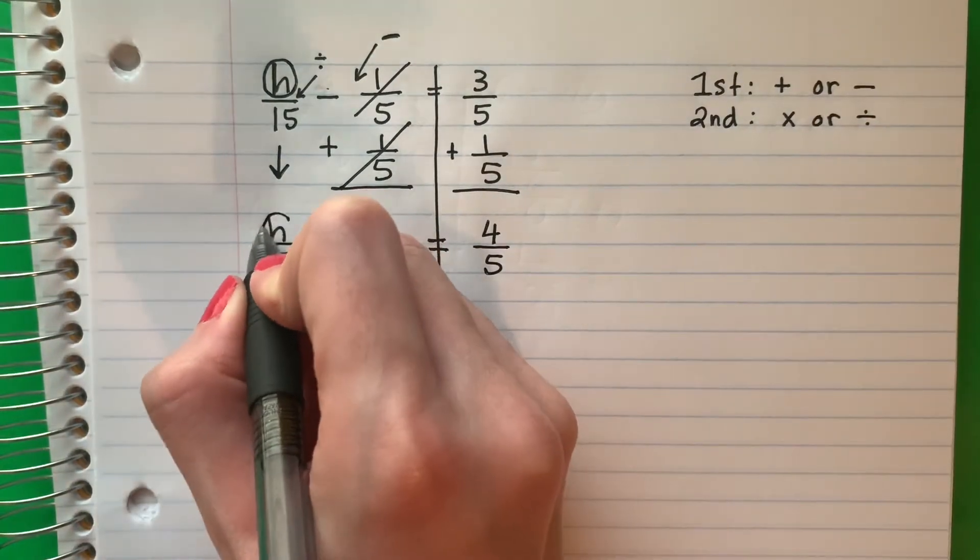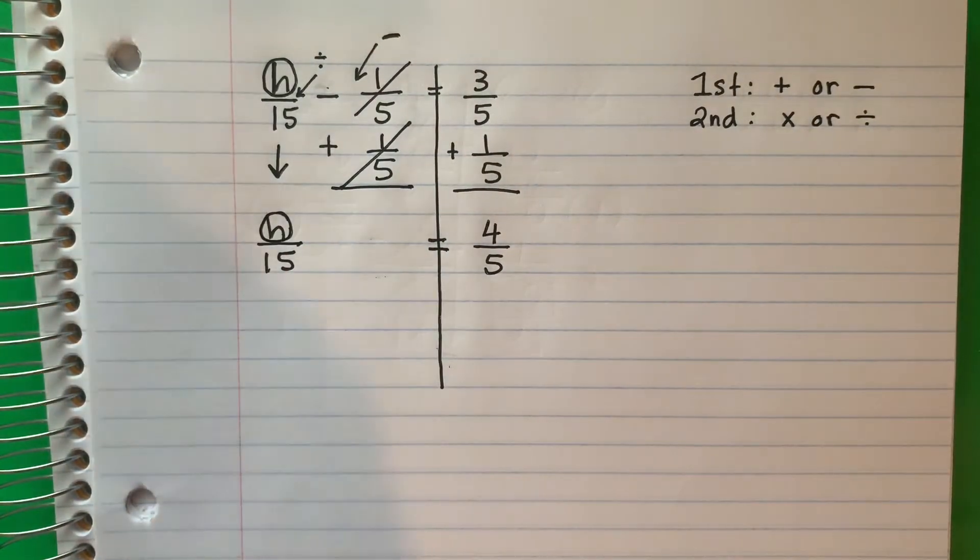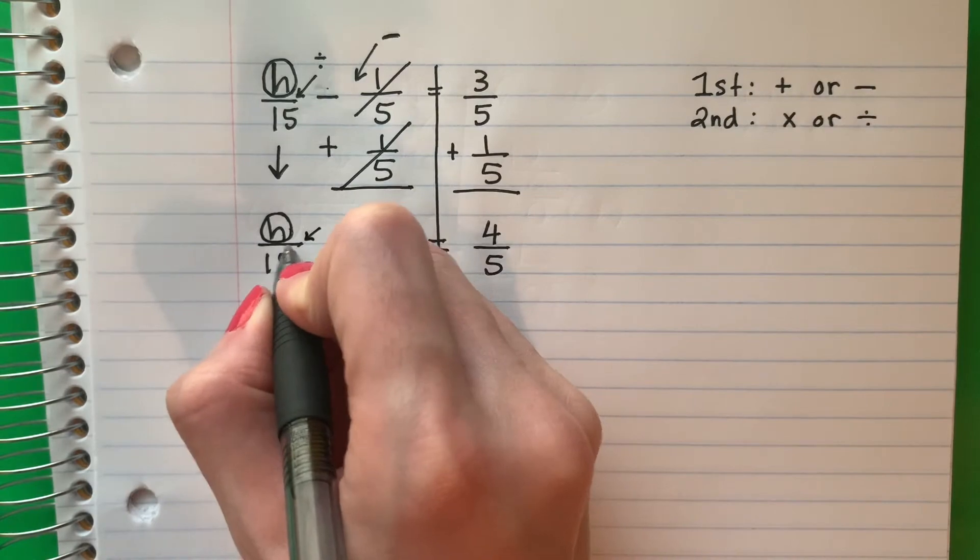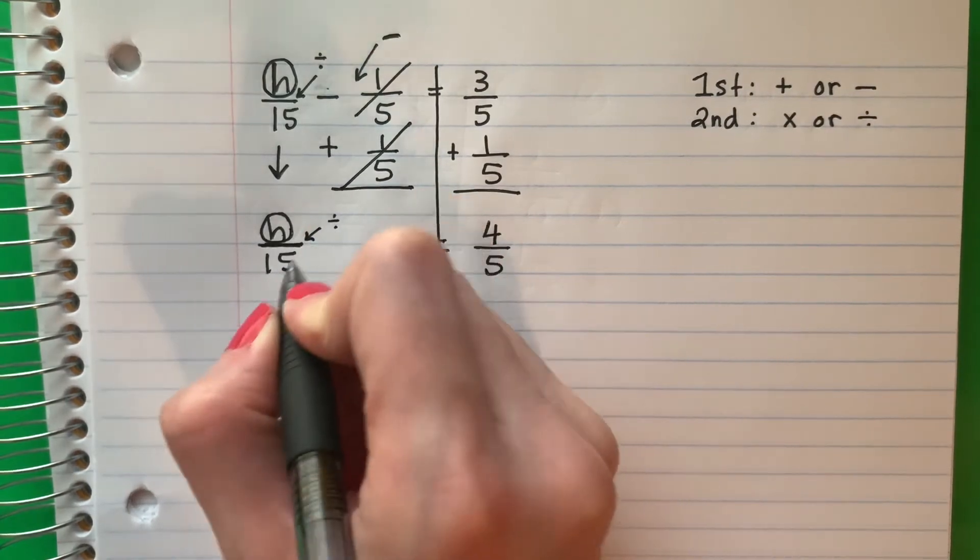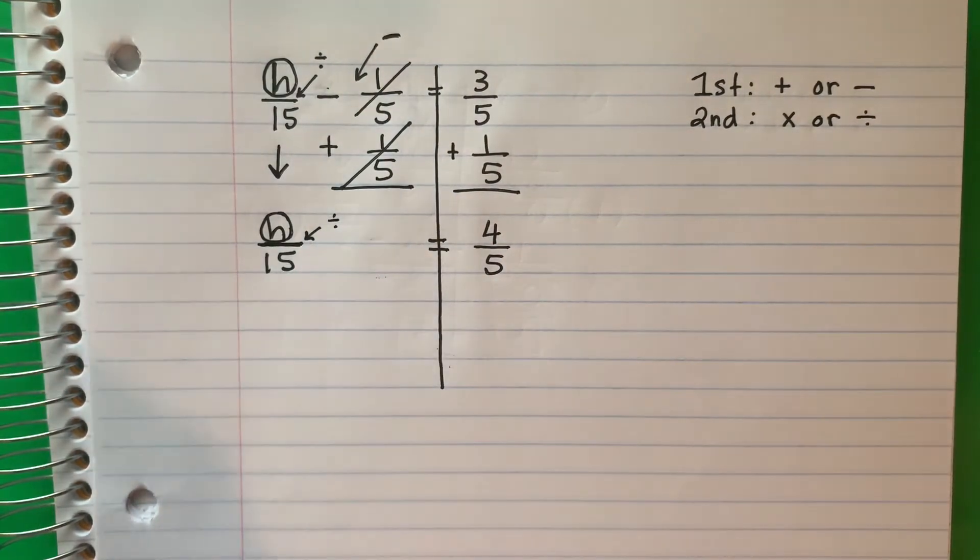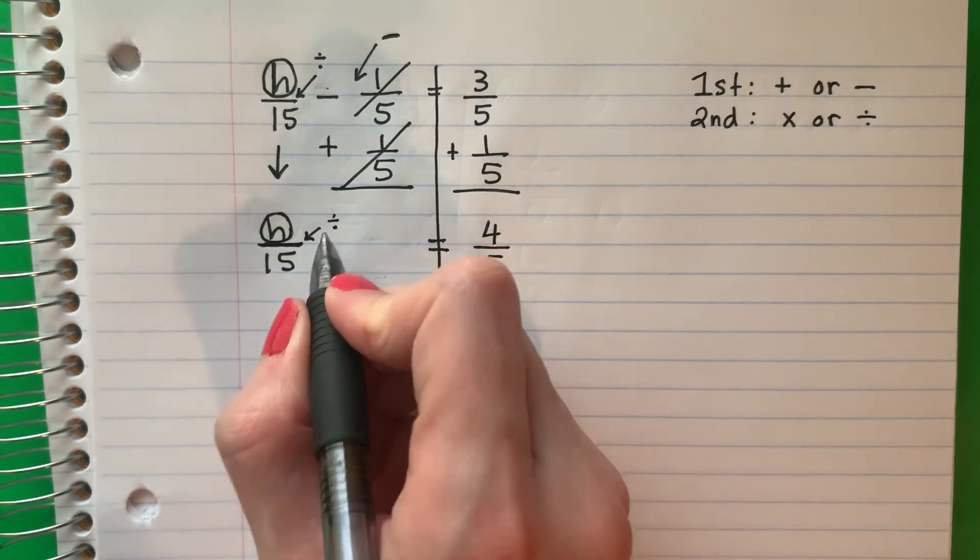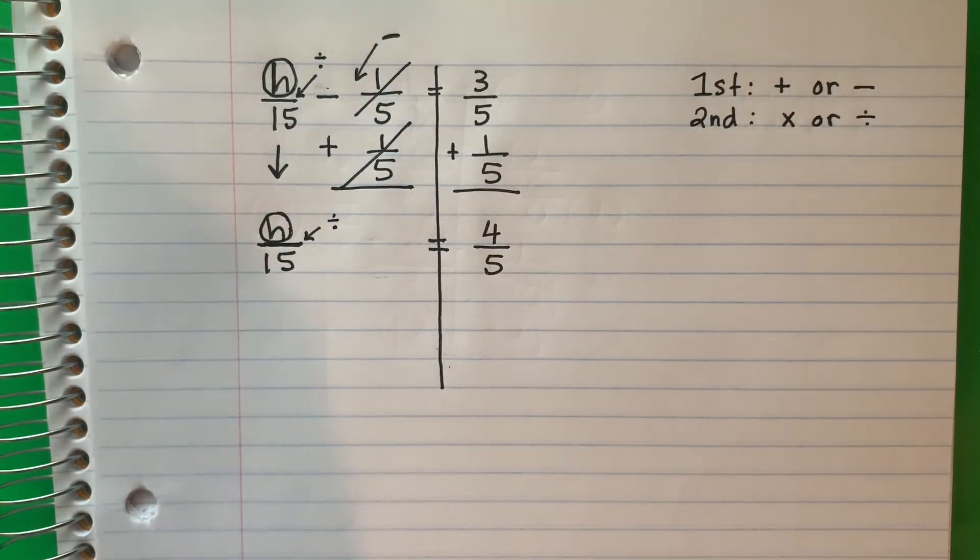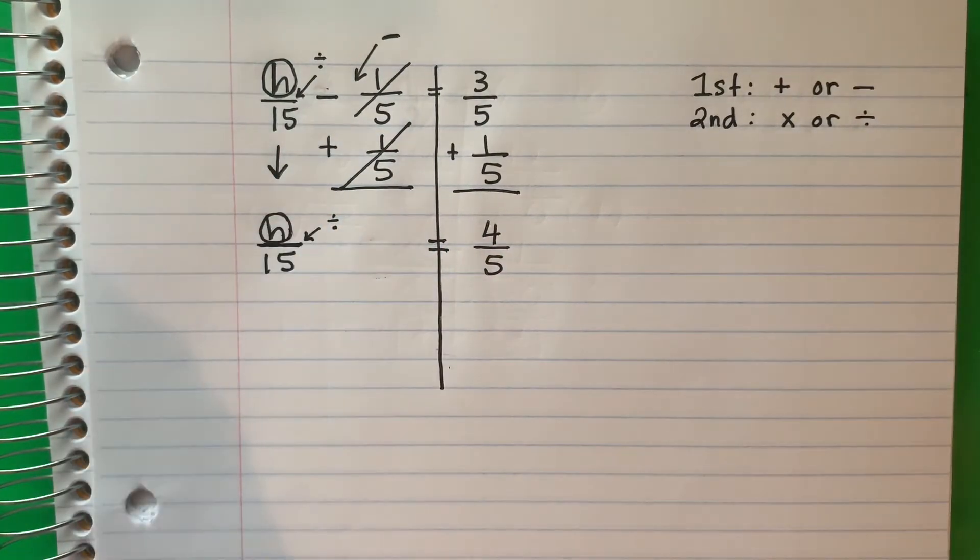Okay. Now I want the H alone. Quiero el H solo. This is divide here. This is divide by 15. I need to get rid of the 15. So the opposite of divide. El opuesto de división is multiply. Es multiplicación.